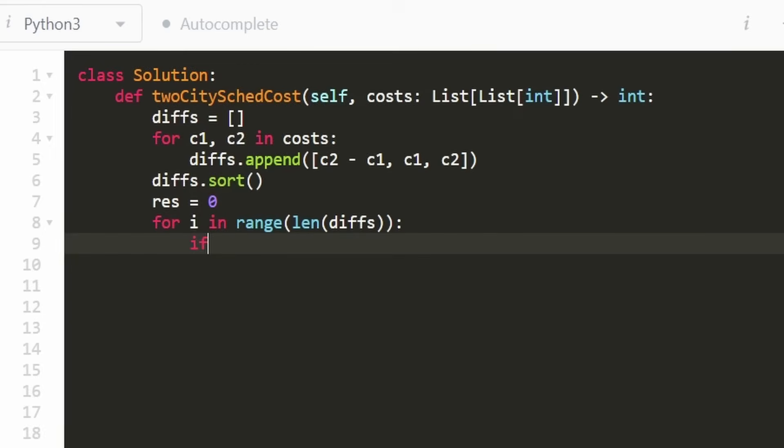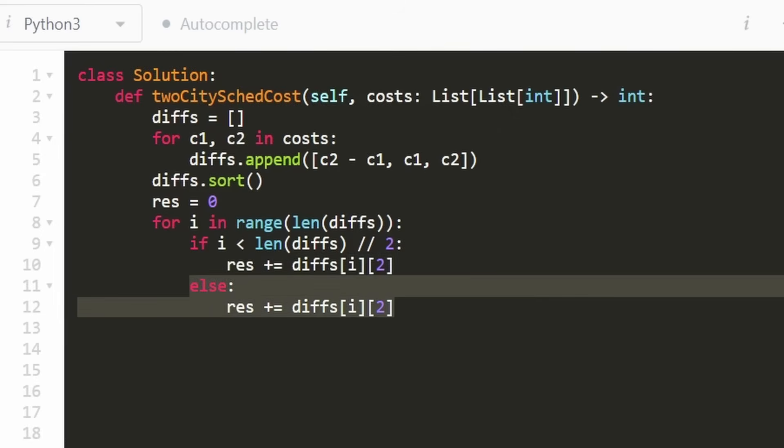We can do that pretty easily by just taking the index, checking if it's less than half of the length of the array. If that's the case, then we can add the cost to the result. But what cost are we getting? Let's take the diffs at index i, which is the position that we're at right now. And then we want the cost to send them to city two, so we can get that by taking index two. The else is going to be just as simple. The only difference was that the second half of them, we're going to be sending to city one. So we can get index one to do that. And then all we have left to do is return the result. And as you can see, yes, it does work. And it's very efficient.